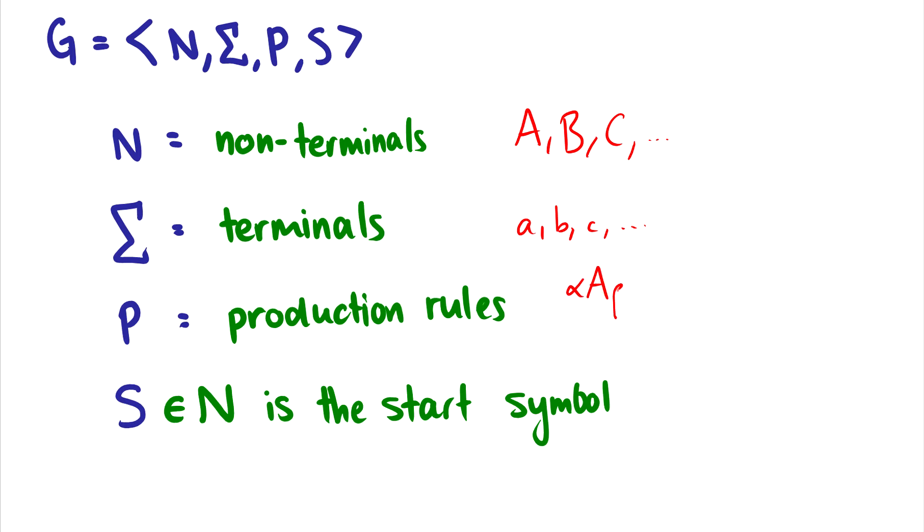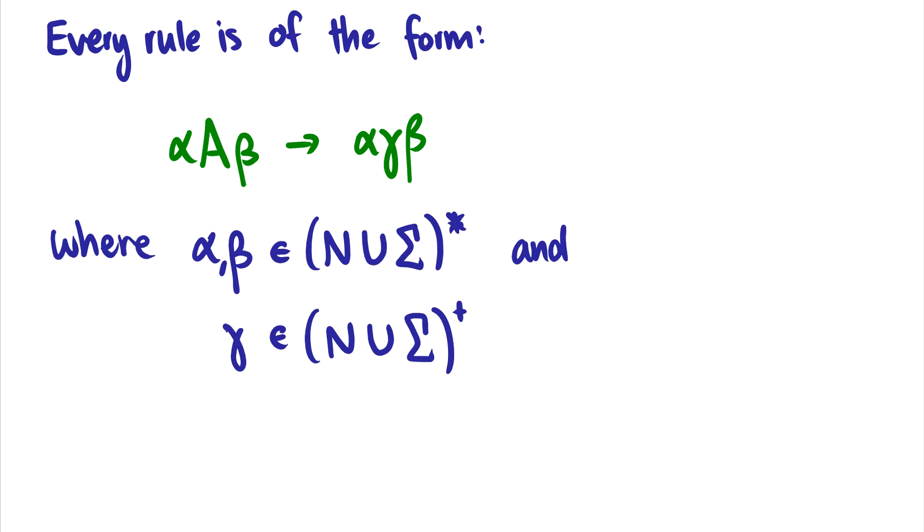Essentially, we're going to have αAβ going to αγβ. And we'll have restrictions on α and β, which we'll talk about in just a second. And then we have S in the set of non-terminals, which is a start symbol. So just like before, I'm going to pick S as the default start symbol. Let's talk about the production rules more specifically. So I said αAβ goes to αγβ. It's important that the meat of what we're changing in every rule is the non-terminal symbol going to some string γ.